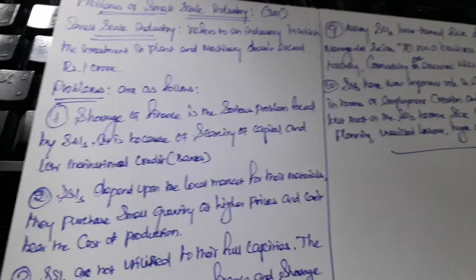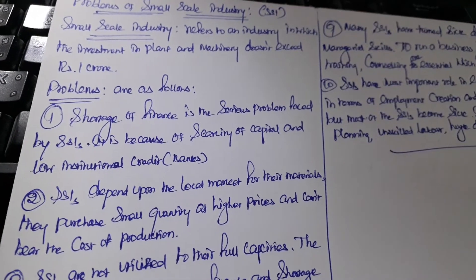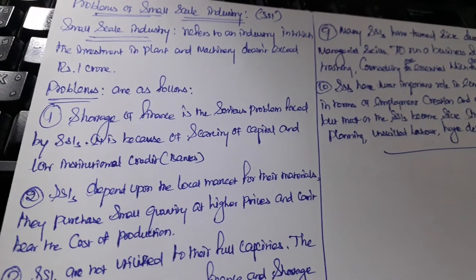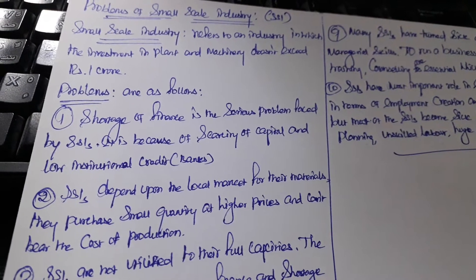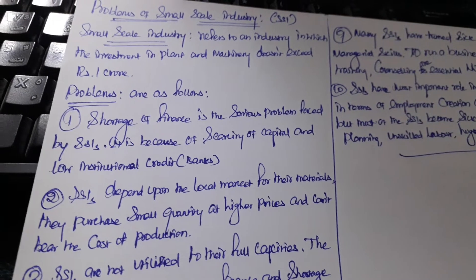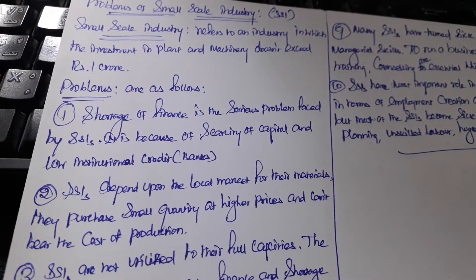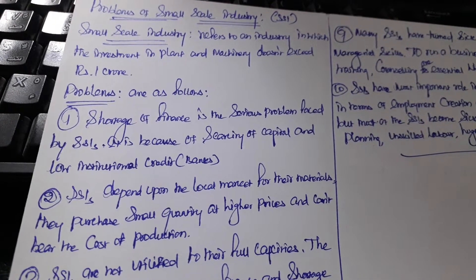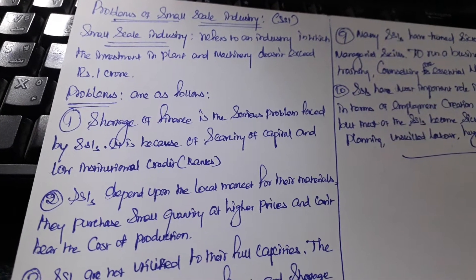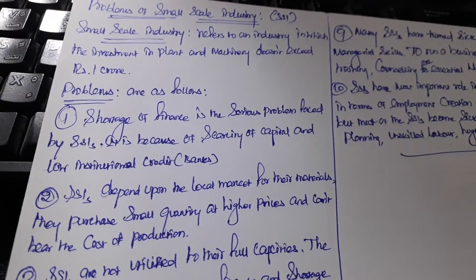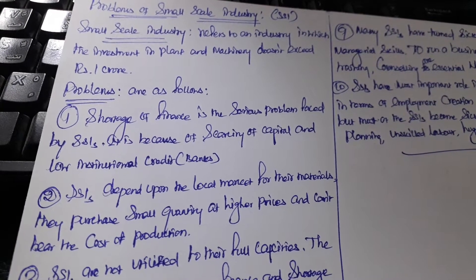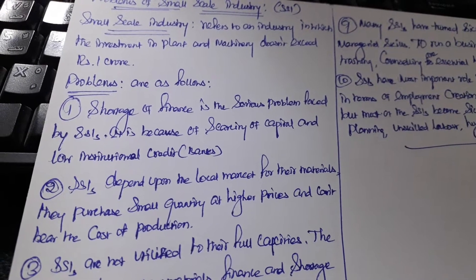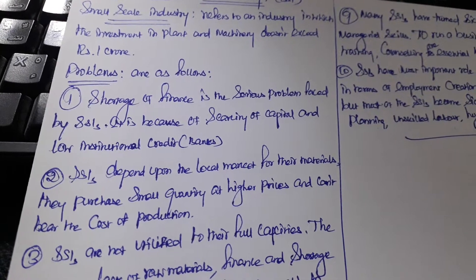The first problem faced by SSIs is shortage of finance. Shortage of finance is a serious problem faced by SSIs. This problem arises because of the scarcity of capital and the inadequate finance from institutional credit agencies such as banks.